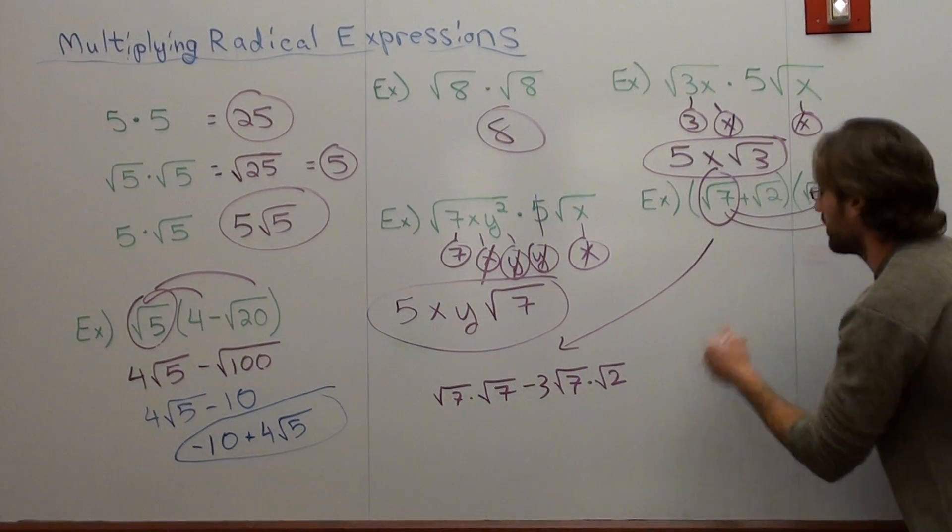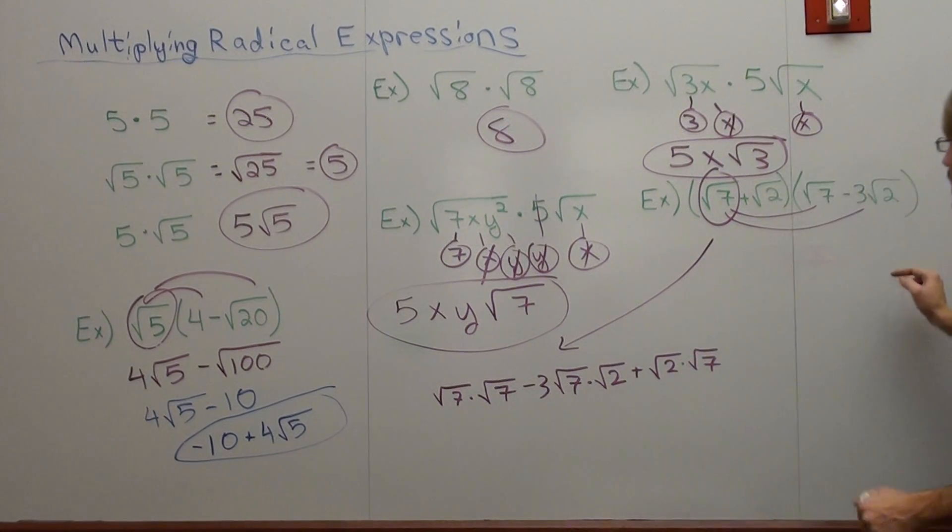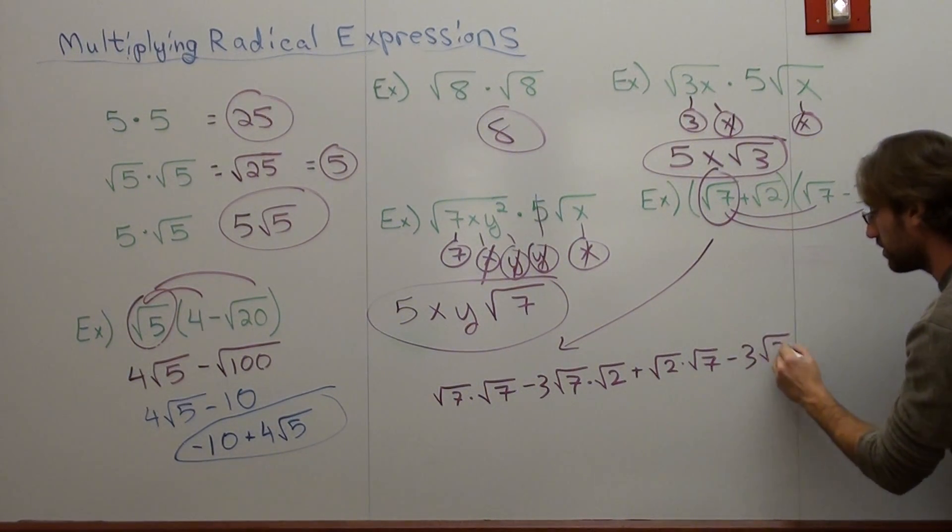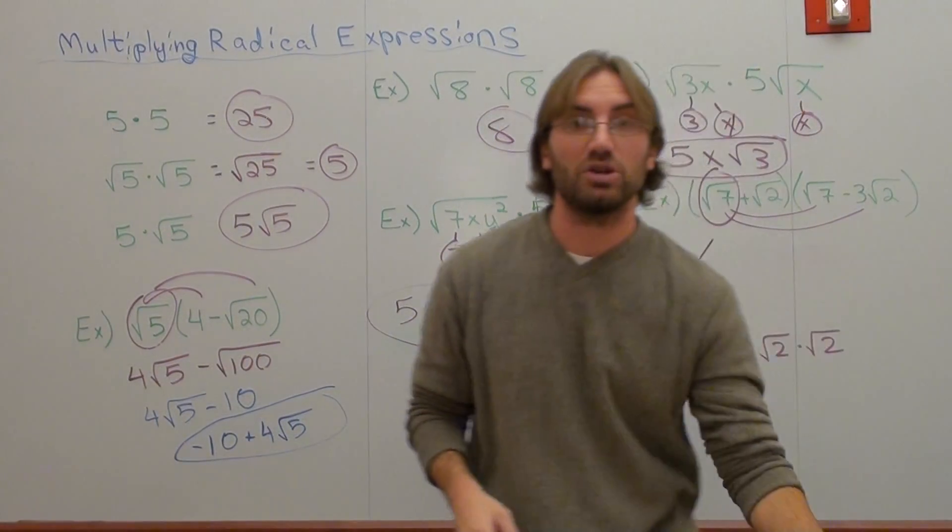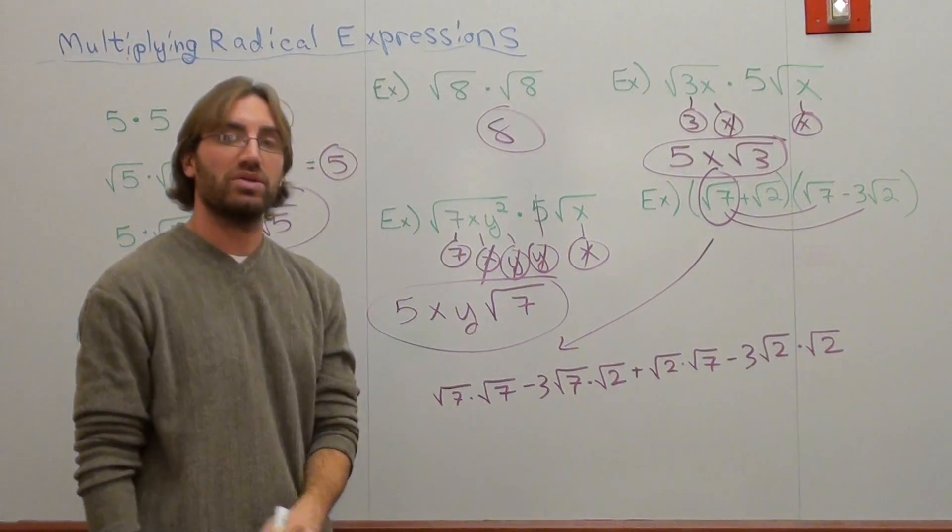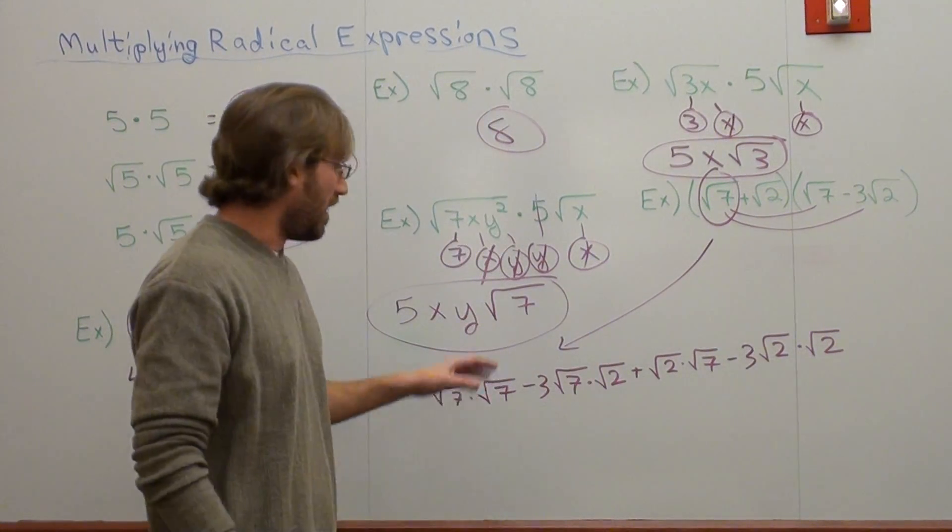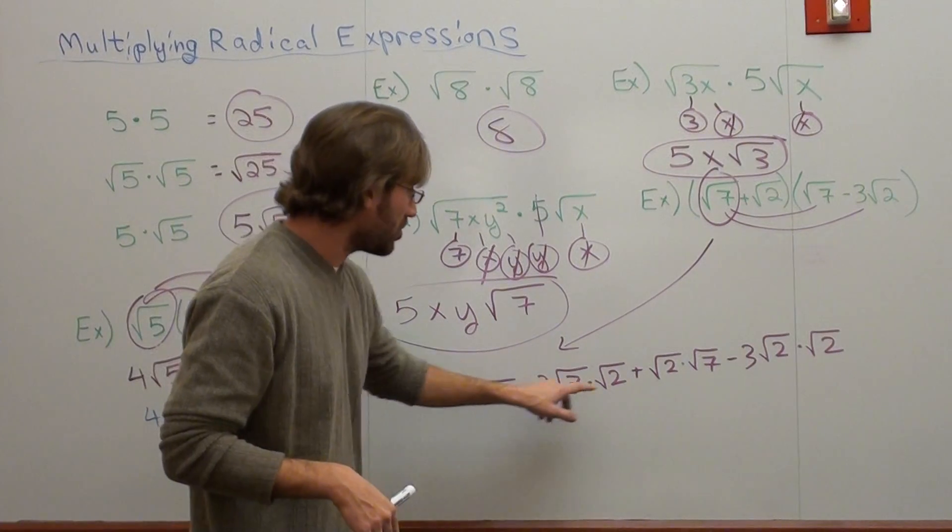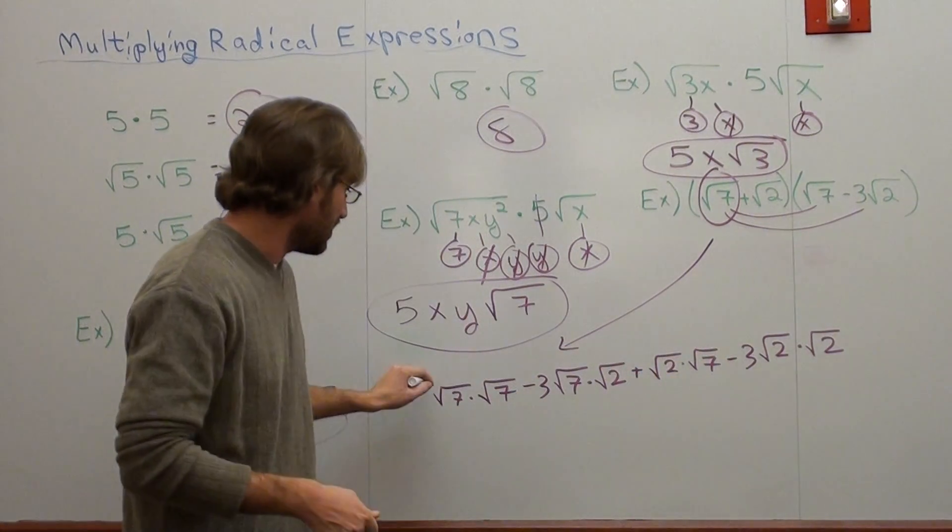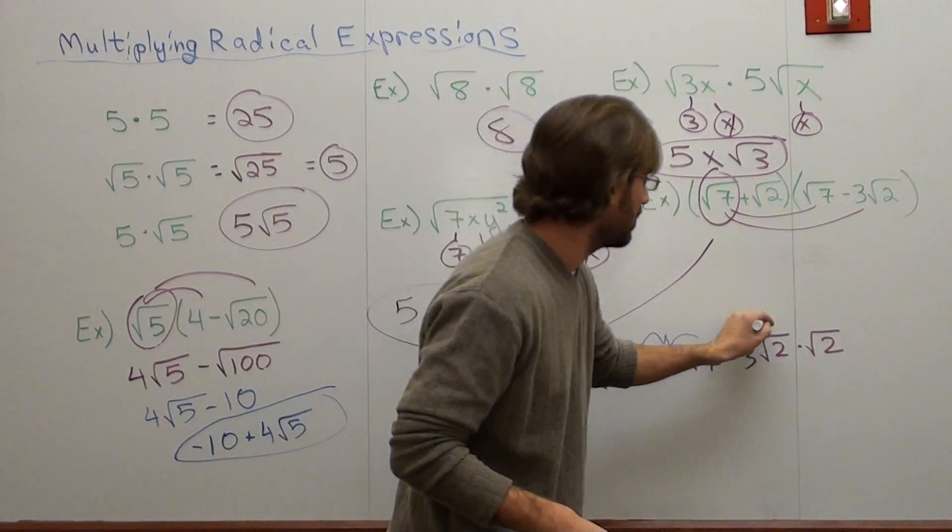So square root 7 times square root 7 subtracted by 3 square root 7 times square root 2. Now, square root 2 times square root 7, that's going to be plus. Plus square root 2, square root 7, and square root 2 times negative 3 square root 2 is negative 3 square root 2 times square root 2. Let's fix this monstrosity. Make it a little bit easier for everybody.